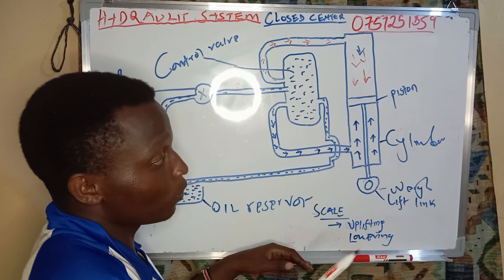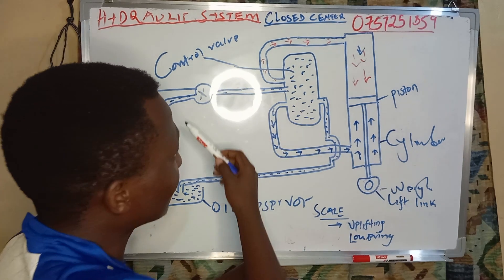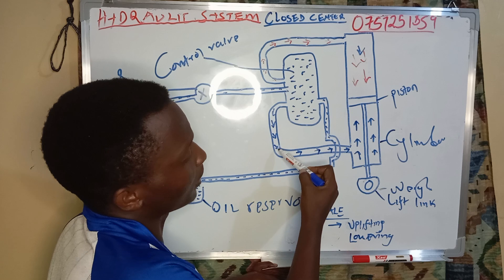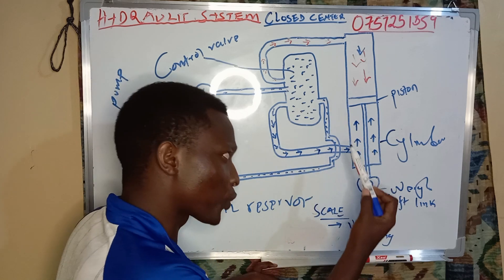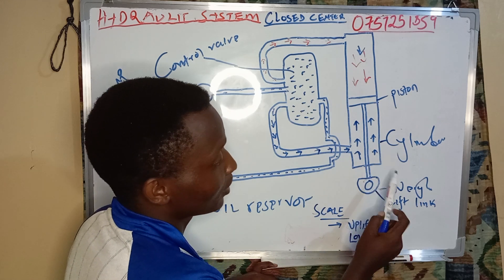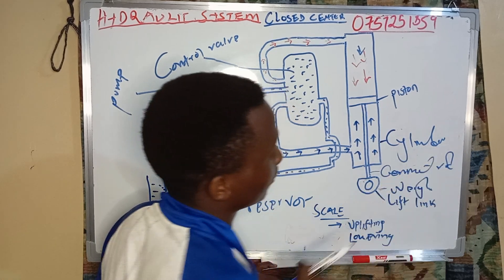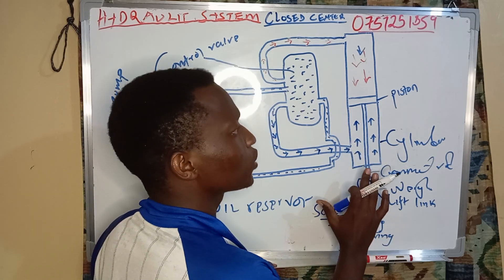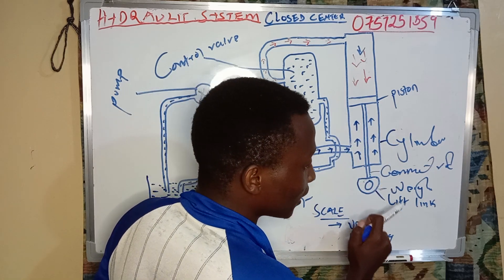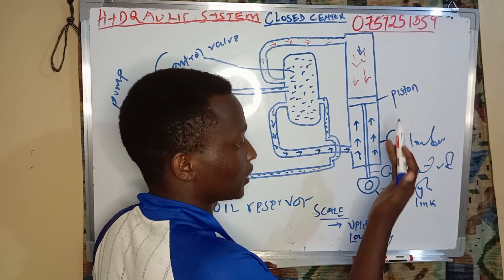Now assume I want to lift the load. After the oil has been pumped into the control valve, the oil will get inside this channel and get into the cylinder at high pressure, causing upward movement of the piston. This is the connecting rod. The high pressure will cause the piston to move upward, resulting in the upward lifting of the load.